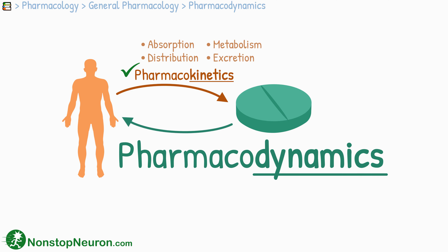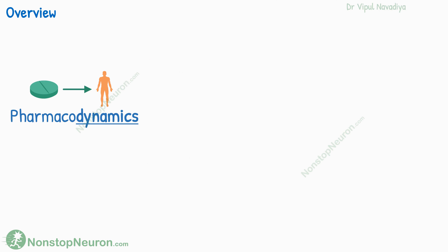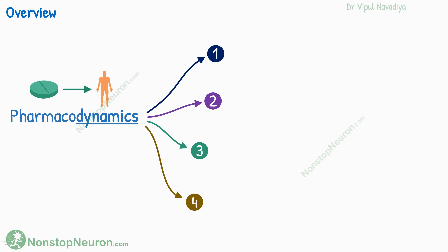So here we have a totally different set of concepts to learn. First, let's briefly overview what is studied under pharmacodynamics. Pharmacodynamics answers four broad questions regarding the drug: how the effects of the drugs are produced, what type of effects are produced, how much of an effect is produced at different doses, and how these effects are modified.